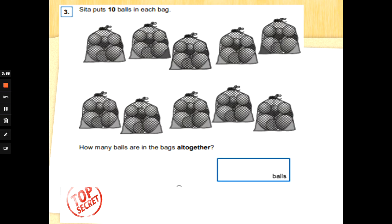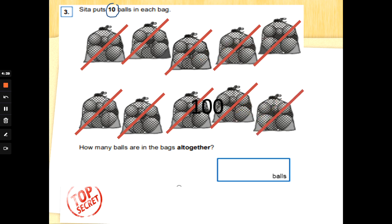Ceta puts ten balls in each bag. How many balls are there in the bags all together? We've got to look that it tells us there are ten balls in each bag. So we are counting in tens every time we cross a bag out. This is the ten times table. Let's count in tens and cross each bag out as we count so we know we've used them. Ten, twenty, thirty, forty, fifty, sixty, seventy, eighty, ninety, one hundred. There are one hundred balls all together. Well done.